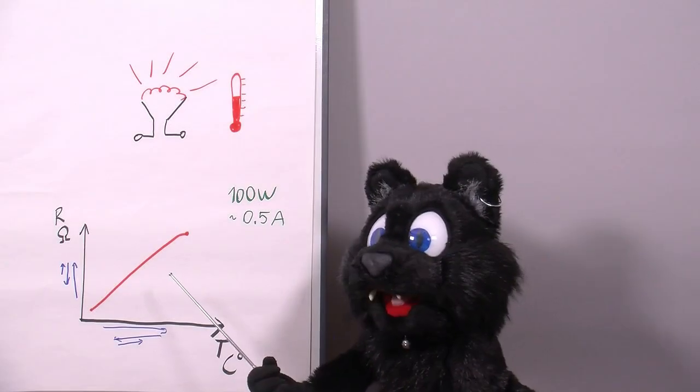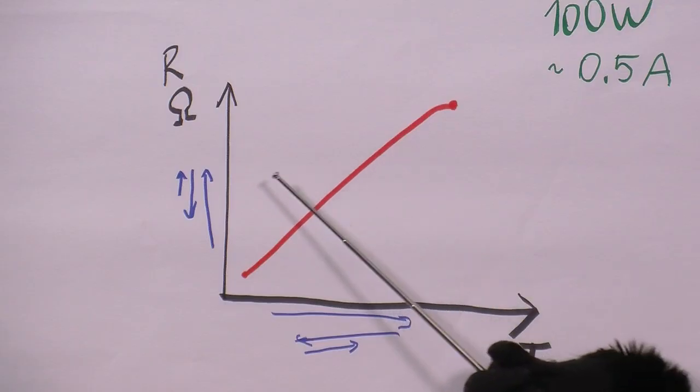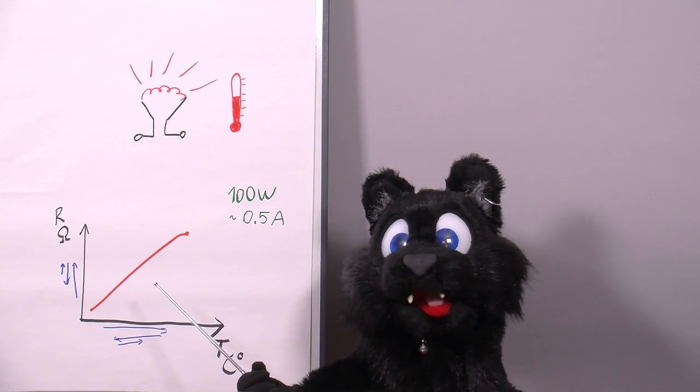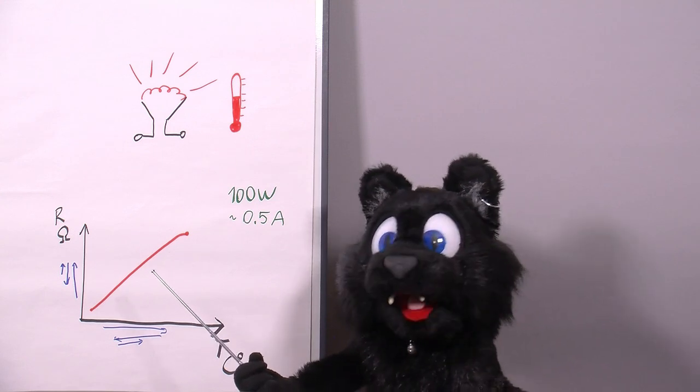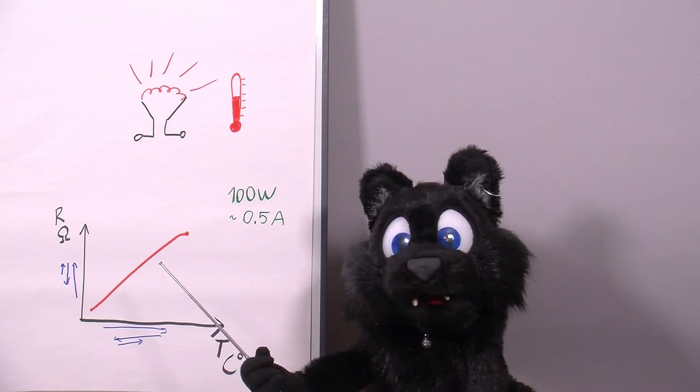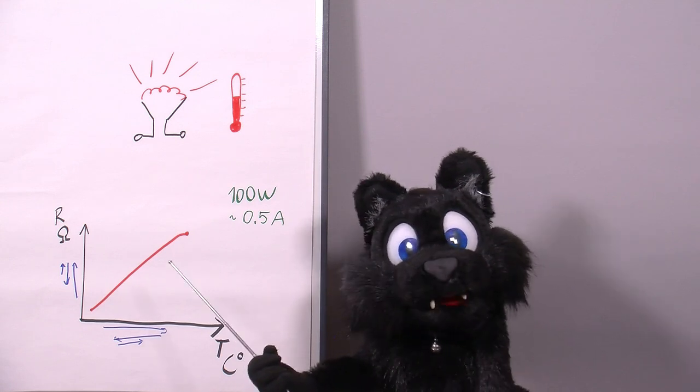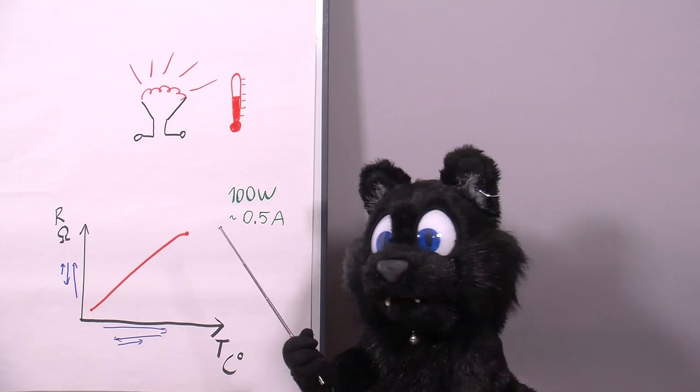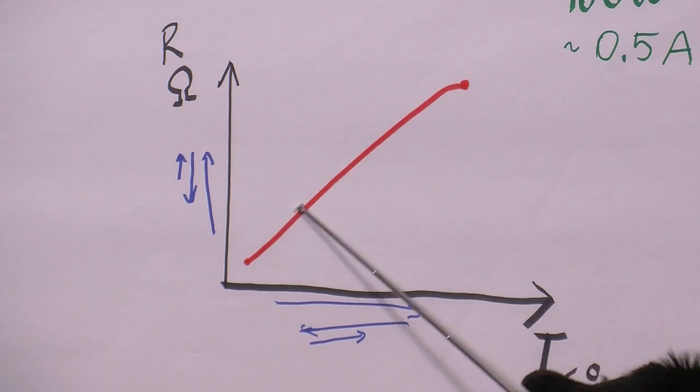So, more current, more heat, more resistance, resulting in less current, cooling down, and less resistance, causing more current, and so on. Until the system reaches an equilibrium, and the bulb is happily chugging along at whatever wattage it is rated.